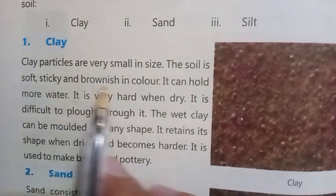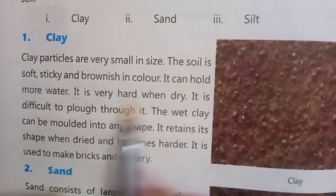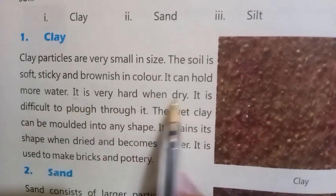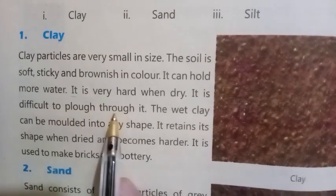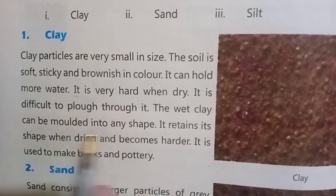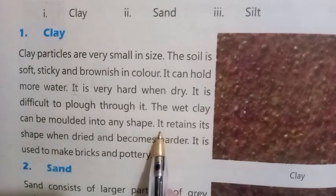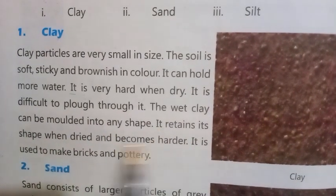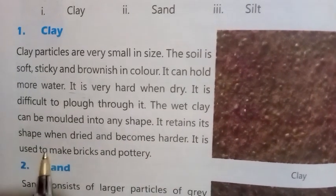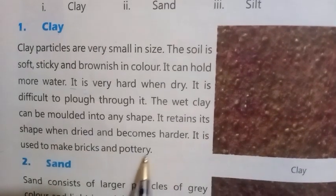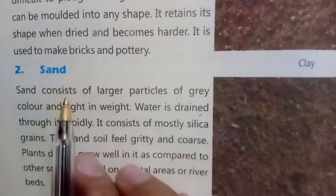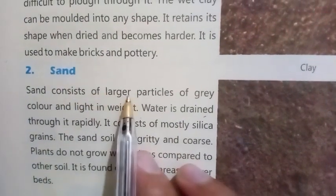Clay soil is soft, sticky, and brownish in color. It can hold more water. It is very hard when dry and is difficult to plough through. The wet clay can be molded into any shape; it retains its shape when dried and becomes harder.